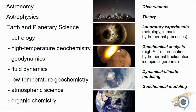Our team constitutes a large range of interdisciplinary expertise, spanning from astronomy and astrophysics to earth and planetary sciences, including petrology, high-temperature geochemistry, geodynamic fluid dynamics, low-temperature geochemistry, and all the way to atmospheric science and organic chemistry. In terms of tools and approaches, we will be making new observations of planet-forming regions outside our solar system — seeing planet formation in action. We'll have astrophysical theory of planet formation, lab experiments from petrology and impact and hydrothermal processes, geochemical analysis including hydrothermal fractionation and isotopic fingerprints, and modeling components including dynamical climate, magma ocean, and geochemical modeling.